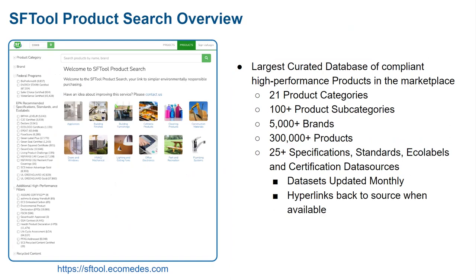We're talking 21 different categories, over 100 different subcategories, over 5,000 brands, over 300,000 different products. And it's growing and consistently updated.